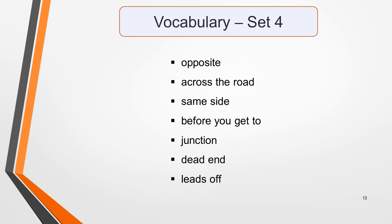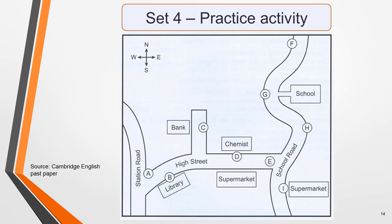Vocabulary set 4: opposite, across the road, same side, before you get to, junction, dead end, leads off. The chemist is opposite a supermarket. They are going to build new houses across the road from the school at point G. There is a supermarket on the same side of the road as the library. Walk west along High Street and you'll pass the library before you get to the junction with Station Road. The bank is on a dead end road that leads off the High Street.